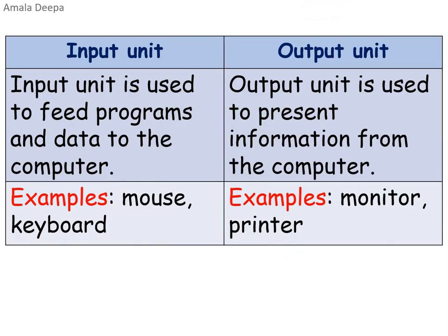The differences between input unit and output unit: Input unit is used to feed programs and data to the computer — examples are mouse and keyboard. Output unit is used to present information from the computer — examples are monitor and printer.